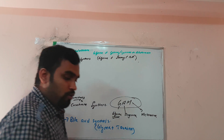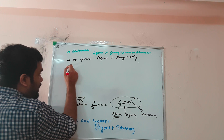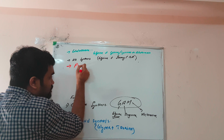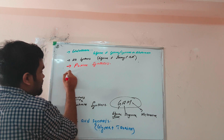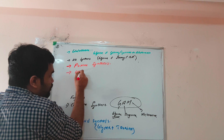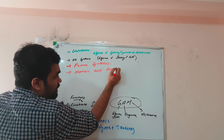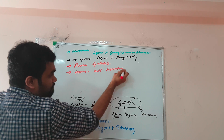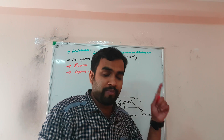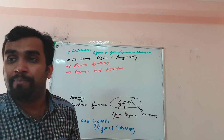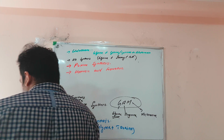Another important function of glycine is purine synthesis — remember it is purine, not pyrimidine; they will try to confuse you. The other function is hippuric acid formation, which occurs inside the liver. Hippuric acid shows how well the liver is working — if the liver is functioning properly, more hippuric acid is formed. This was previously used as a liver function test, though it is not commonly used nowadays.